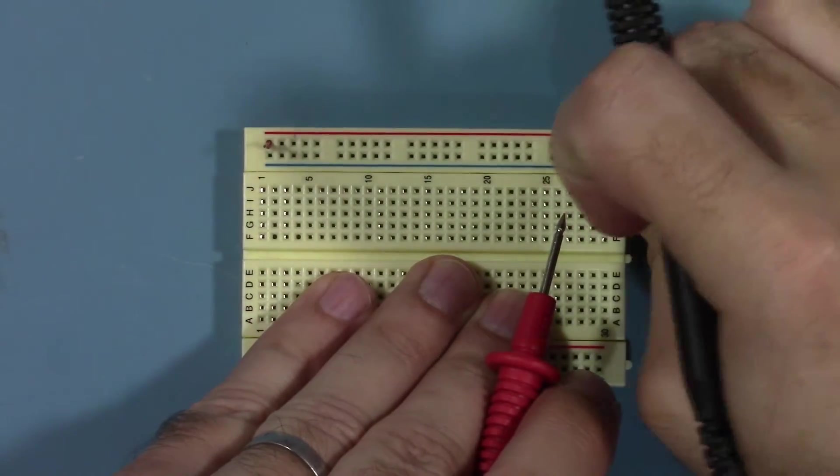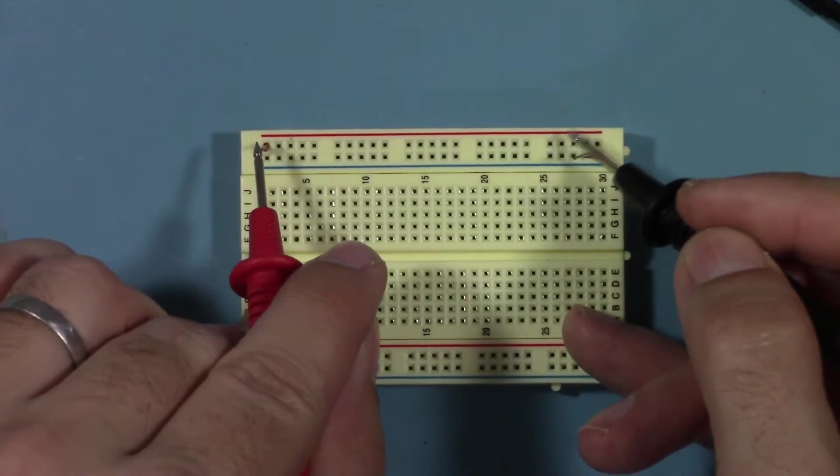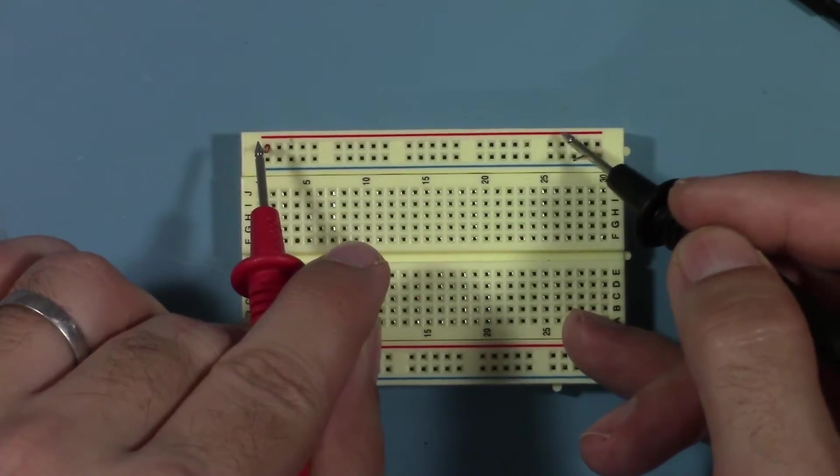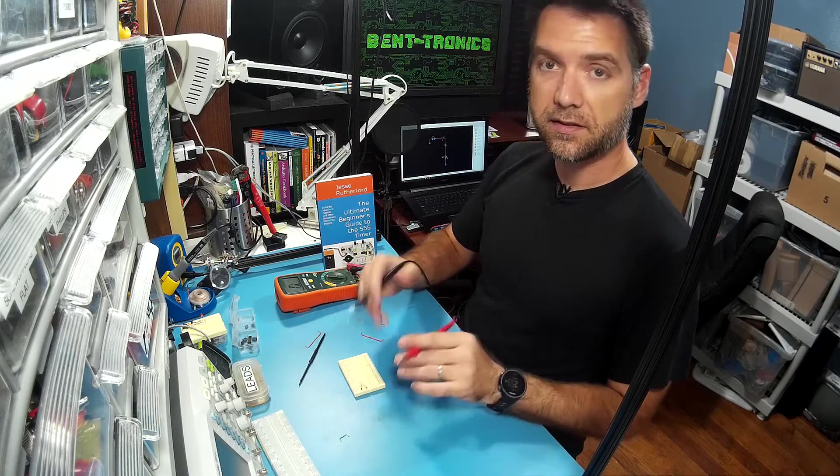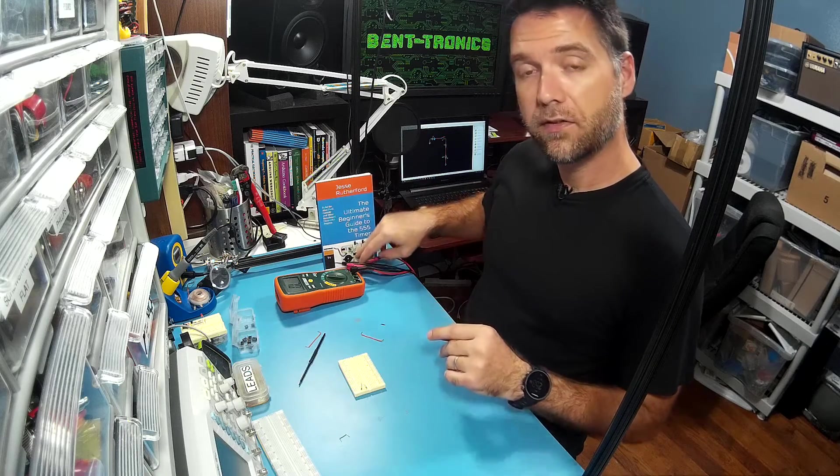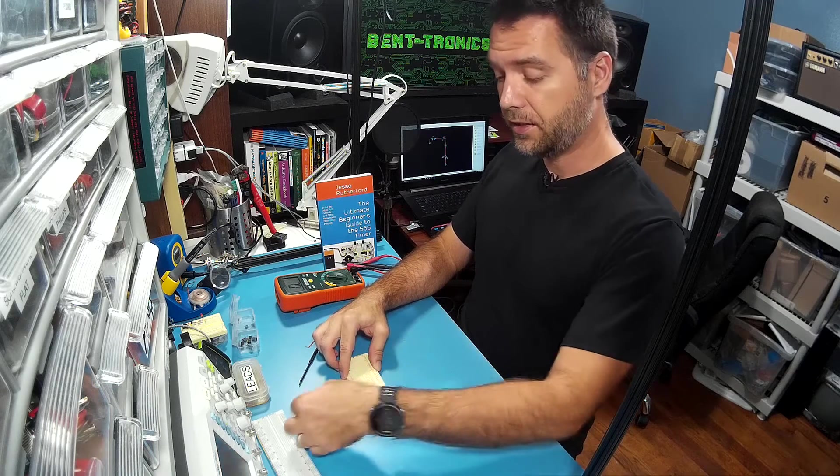However, if I switch this down on this side to the bottom row, and now I touch these together, there's no beep because there's no continuity. So that's how you can test to see if certain points on your breadboard are connected to each other.